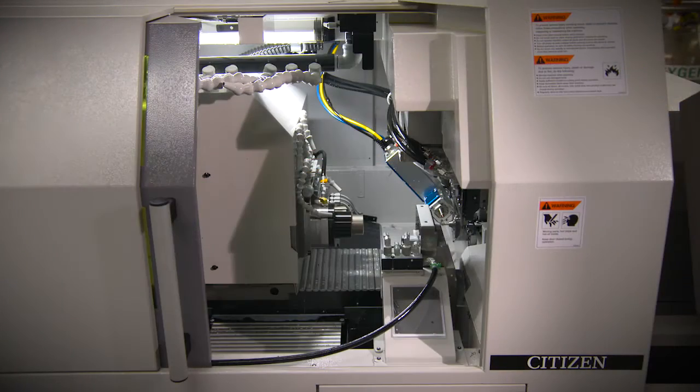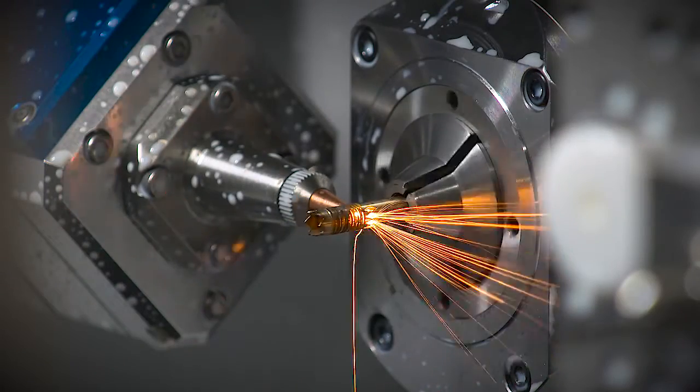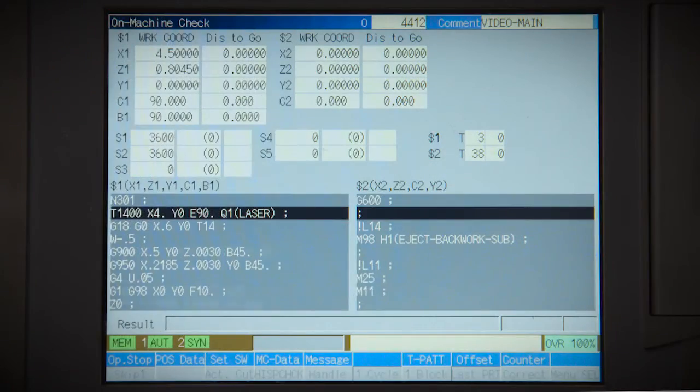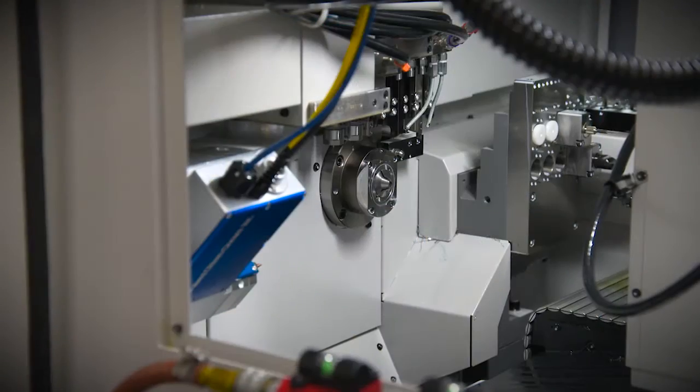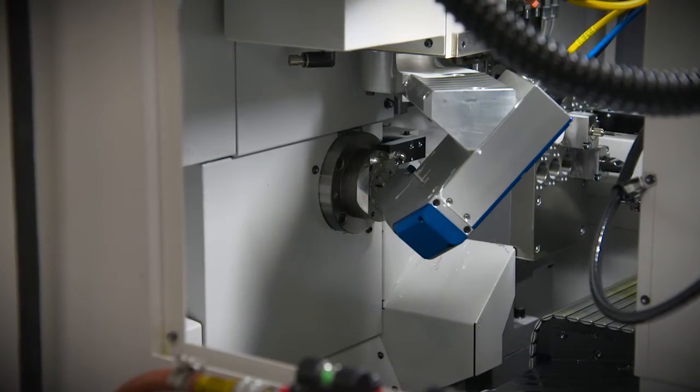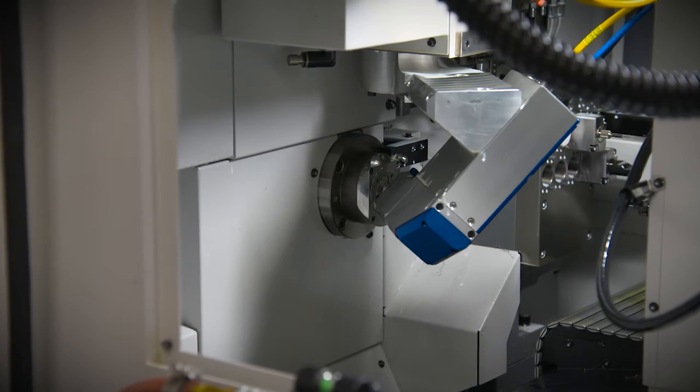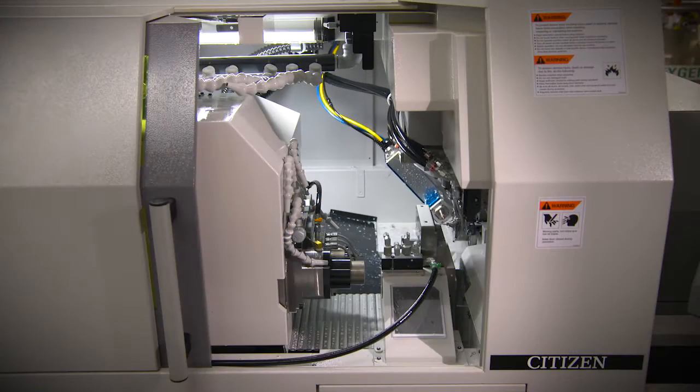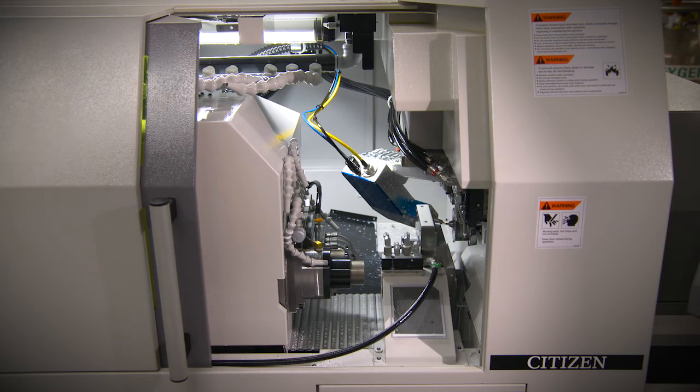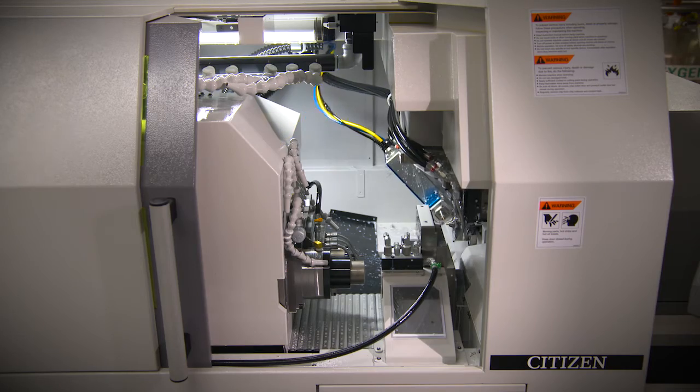The laser head assembly mounts on the gang tool slide of the Syncom machine. The movements are programmed in the part program of the machine control. The unit has the unique capability of also mounting on the B axis tool position, allowing for laser cutting at various angles for components that require angular laser cut features.